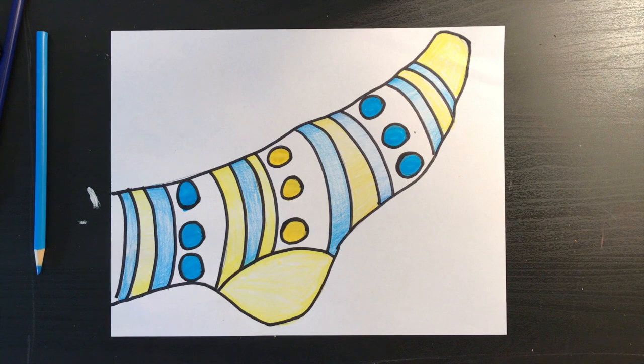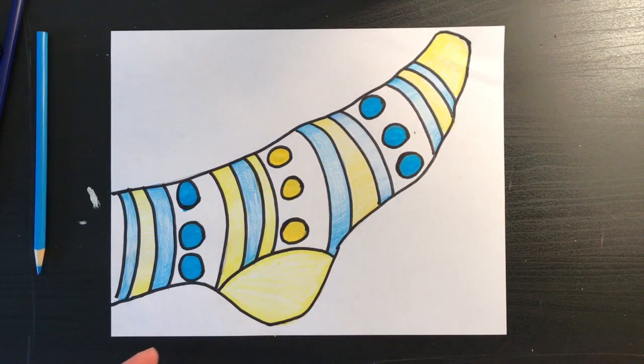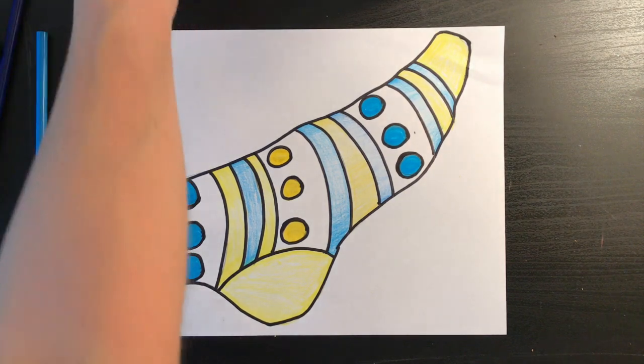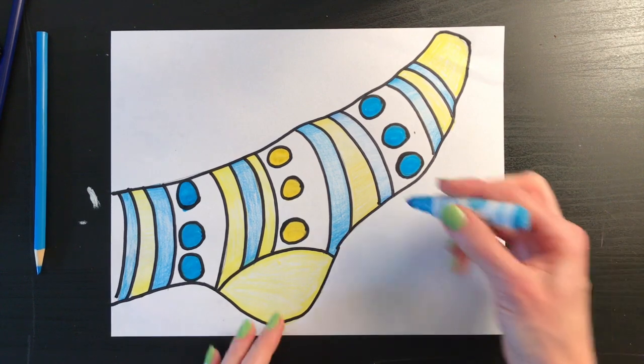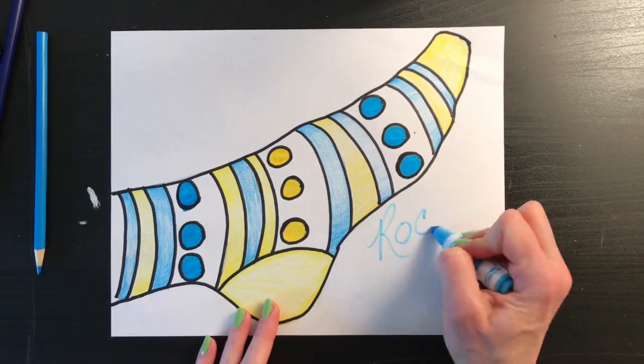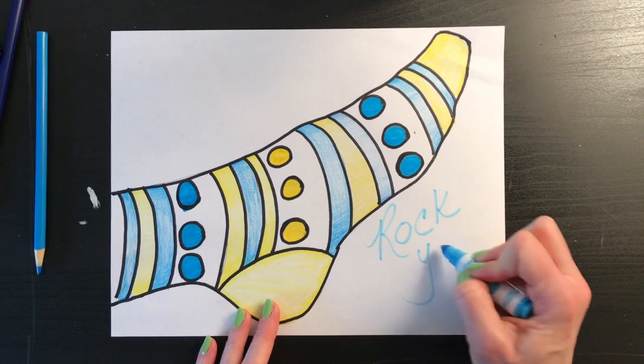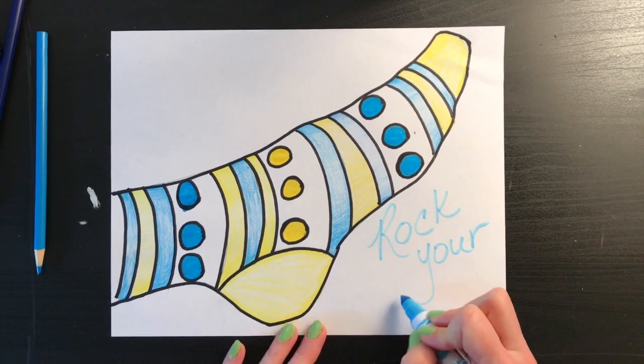So after that, you're all done. If you want it, one last thing you could do is cut it out if you'd like to. I think I'm going to leave mine just on the paper and add one little thing right over here in this big empty space that says rock your socks.